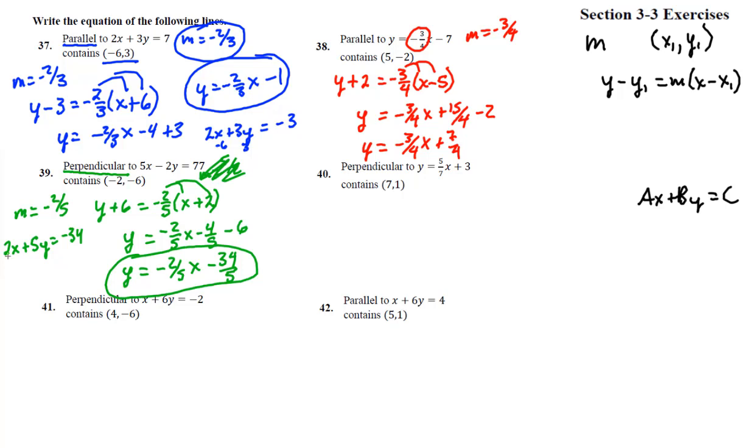Next one, number 40, perpendicular to. So that means we don't want 5 sevenths, we want the slope to be negative 7 fifths. Good, there's our slope, and here's our point. Y minus y1 equals negative 7 fifths times x minus the x value, oh, I kind of covered that up with my drawing there. So let's simplify it. And we get negative 7 fifths x plus 49 fifths. Add the 1 over, and that will allow y to be by itself. So we get in y equals mx plus b format, looks all pretty like, 4 fifths plus 1 is 5 fifths, so that's plus 54 fifths.